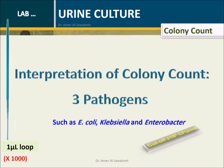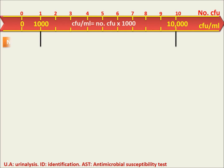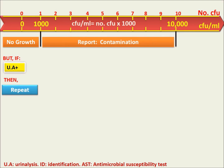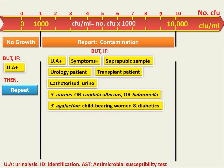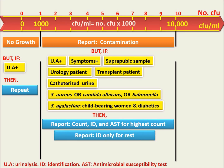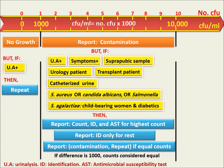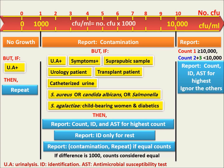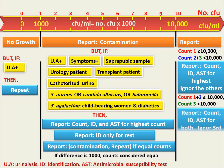Colony count — interpretation for three pathogens, such as E. coli, Klebsiella, and Enterobacter. If the plate has no colonies, report no growth; but if urinalysis is positive, repeat. If the plate has 1 to 9 colonies of each bacteria, report contamination; but if a yellow box condition appears, report count, ID, and AST for the highest count, ID only for the rest, or contamination and repeat if counts are equal. If count 1 is greater than or equal to 10,000 and counts 2 and 3 are less than 10,000, report count, ID, and AST for the highest count and ignore the others. If counts 1 and 2 are equal to or greater than 10,000 while count 3 is less than 10,000, report count, ID, and AST for both and ignore the third. If all counts are greater than or equal to 10,000, report contamination and repeat.